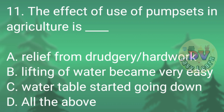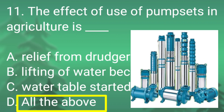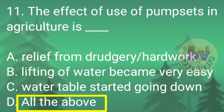Q11: The effect of use of pump sets in agriculture is? Correct answer: All the above. Options include: Relief from strenuous or hard work; Lifting of water became very easy; Water table started going down.